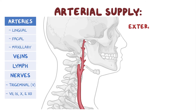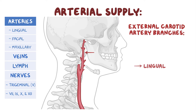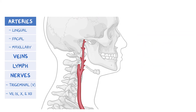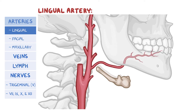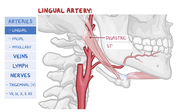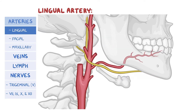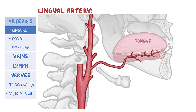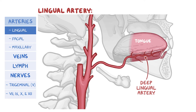First, let's start with the arteries. The arterial supply comes from the external carotid artery branches: the lingual artery, facial artery, and the maxillary artery. The lingual artery is the second branch of the external carotid artery and arises at the level of the greater cornu of the hyoid bone. It runs upwards and medially till it reaches the greater cornu and then dips downwards beneath the posterior belly of digastric and stylohyoid muscles, creating a loop over the hypoglossal nerve. The lingual artery then ascends almost vertically upwards to reach the tongue's inferior surface and continues as its terminal branch, the deep lingual artery, which supplies the anterior two-thirds of the tongue.